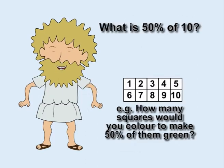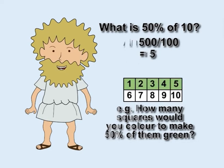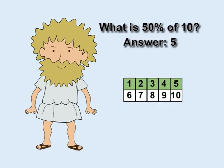What is 50% of 10? To calculate the answer, multiply 50 by 10 and divide the result by 100. 50 multiplied by 10 is 500, and 500 divided by 100 is 5. So 50% of 10 is 5.